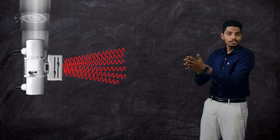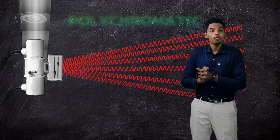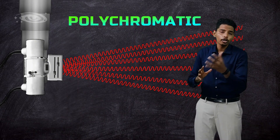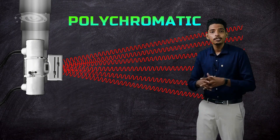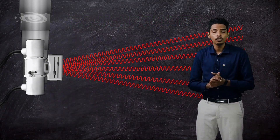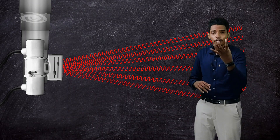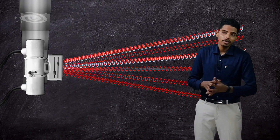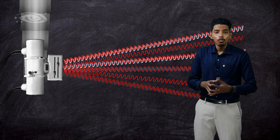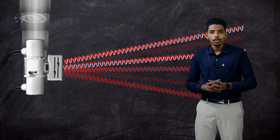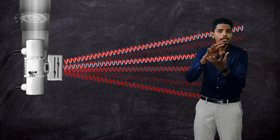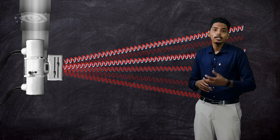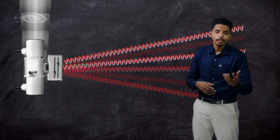The X-rays coming out from the X-ray tube are polychromatic in nature. Polychromatic means there will be a difference in energy — some will be high energy, some will be moderate energy, and some will have low energy X-rays. This combination of different energies is what we call polychromatic.